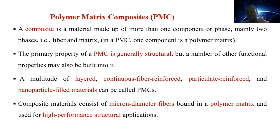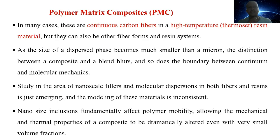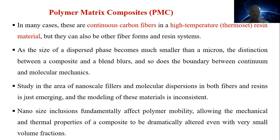Such fibers are bound in a thermoset polymer matrix — not thermoplastic polymers, but thermoset polymers, which are resins — and are combined together to obtain a high-performance structural material. In many cases, the two main constituents are continuous carbon fiber in a high-temperature thermoset resin, which is a suitable combination for high-performance material. Other fiber types or resin types may also be used, including peg-type resins.